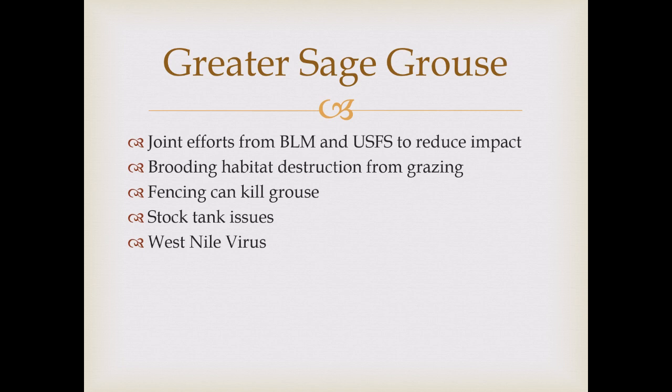The BLM recommends that ranchers install ramps so birds can escape stock tanks, but getting ranchers to comply is difficult. Additionally, those stock tanks have become breeding grounds for mosquitoes, and West Nile virus has become a significant issue — it affects sage-grouse significantly and can reduce populations pretty quickly.